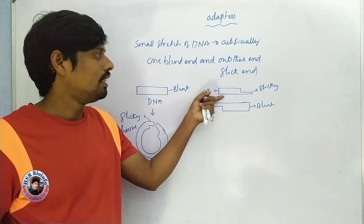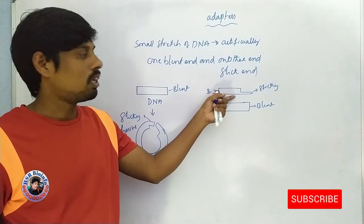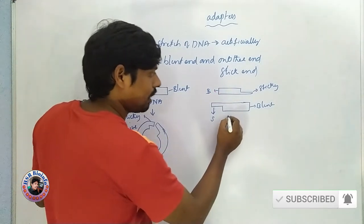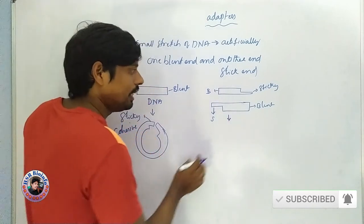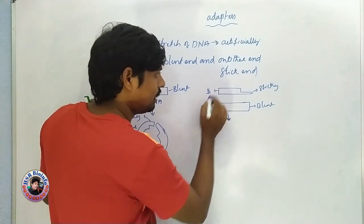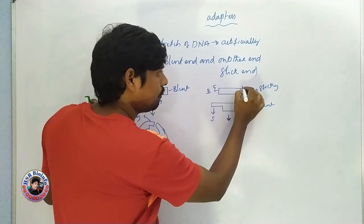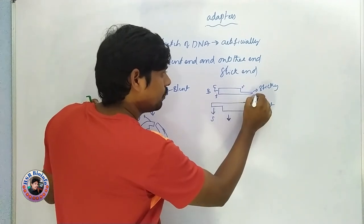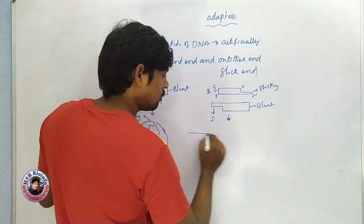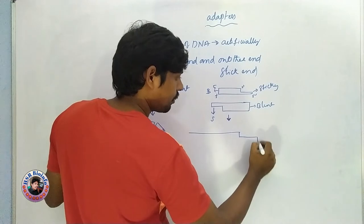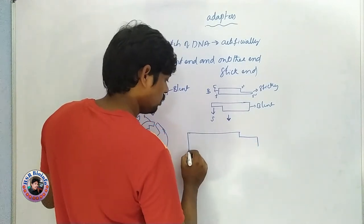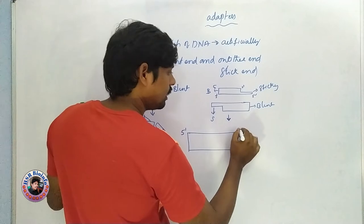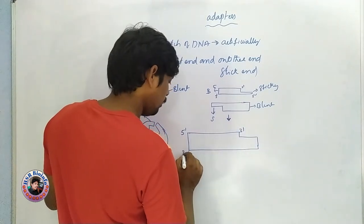This is an artificially created DNA fragment — a small fragment called an adapter. For example, this adapter has a 3' end and a 5' end.